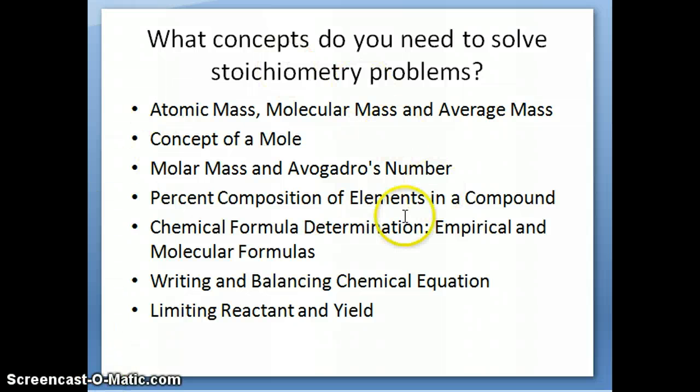I want to leave you with the slide that tells you what's coming up. In order to work through all the stoichiometry problems, you're going to need to understand all of these different concepts. I'm going to deliver each of them in a video. You need to understand the concept of atomic mass, molecular mass, and average mass, what is a mole, how we calculate molar masses, and what is Avogadro's number. Then you need to understand the concept of percent composition, which is coupled with the idea of chemical formula determination. Lastly, you need to know how to write a chemical equation, the concepts of limiting reactant and yield. We're going to put all of these together in a couple of examples, and then a lot of examples you will do in class.